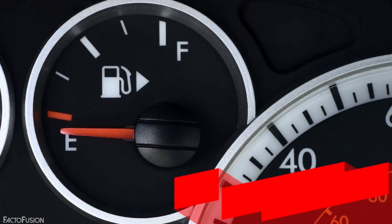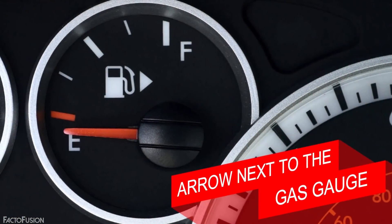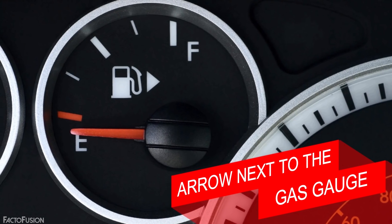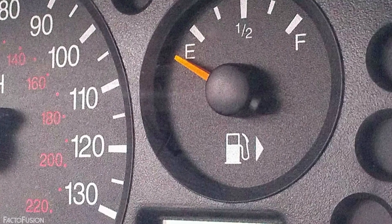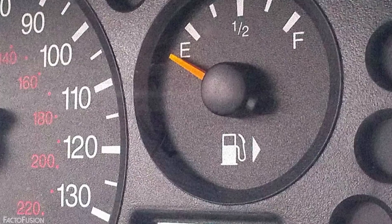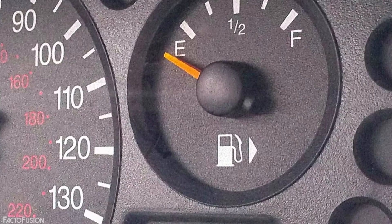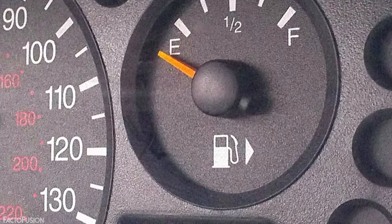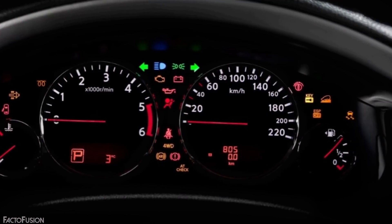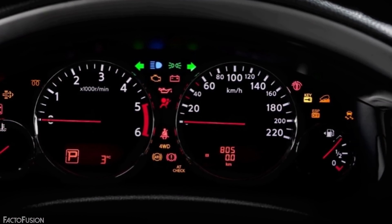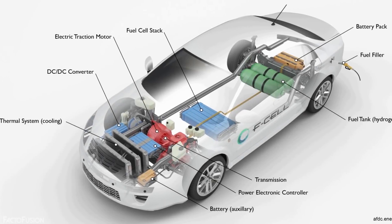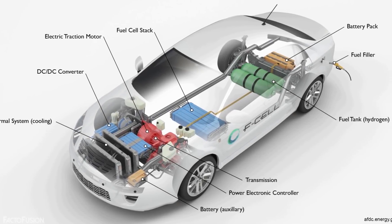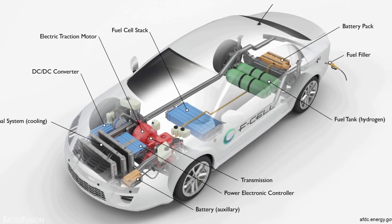At number two: the arrow next to the gas gauge. If you are a driver, you must have noticed this tiny arrow next to the fuel gauge on your speedometer. It's small but very important — it tells you which side your fuel tank is located on.